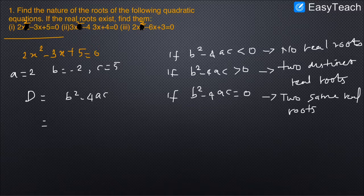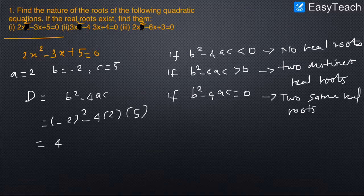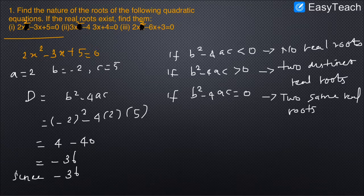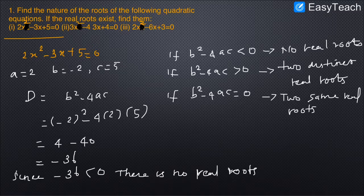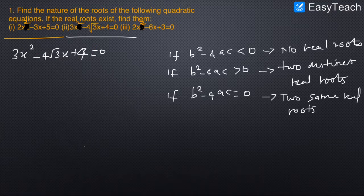For the first problem, b²-4ac = (-2)²-4×2×5 = 4-40 = -36. Since -36 is less than 0, there are no real roots. We do not need to substitute into the formula and find the solution. This problem ends here.